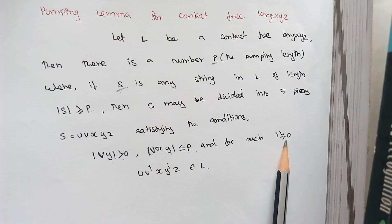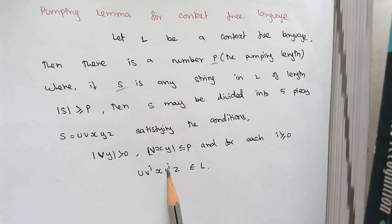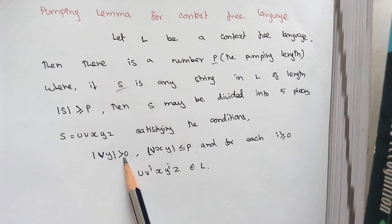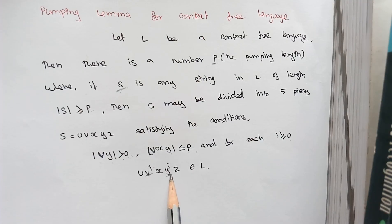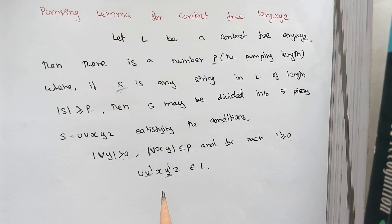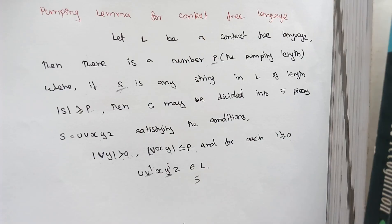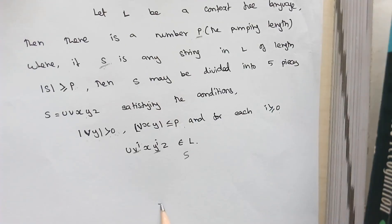If all these conditions are satisfied, then we say: for all i greater than or equal to 0, we are going to put a loop in the V and Y portion. We stated that V and Y are not empty strings — their value is greater than 0. Then we are going to have looping in this portion. In a context-free language, we use a parse tree for deriving strings, starting from the start symbol to the input string S.